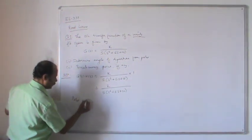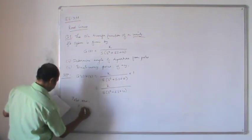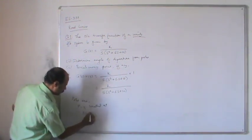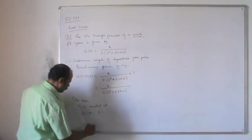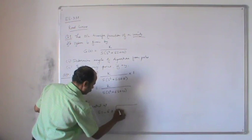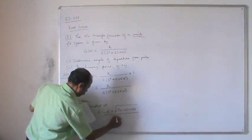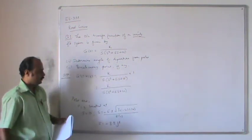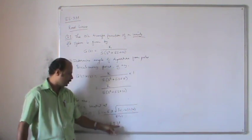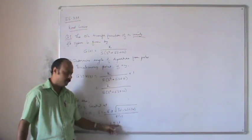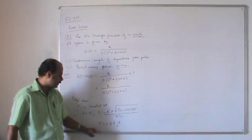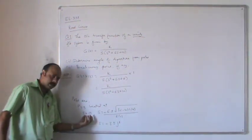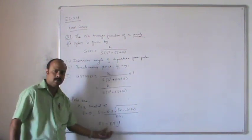The poles are located at s = 0 (at the origin), and using the quadratic formula on s² + 6s + 10 = 0, we get s = (-6 ± √(36 - 40)) / 2 = -3 ± j1. So the three poles are at s = 0, s = -3 + j1, and s = -3 - j1.